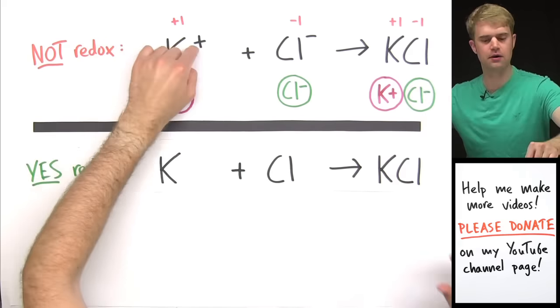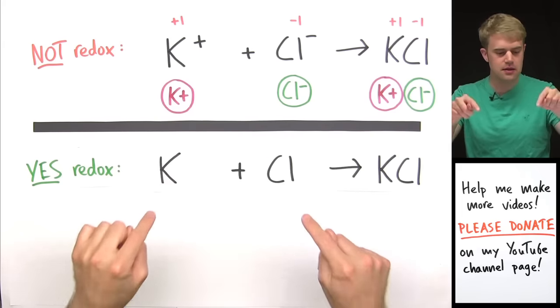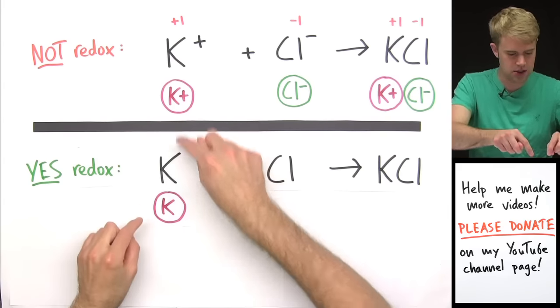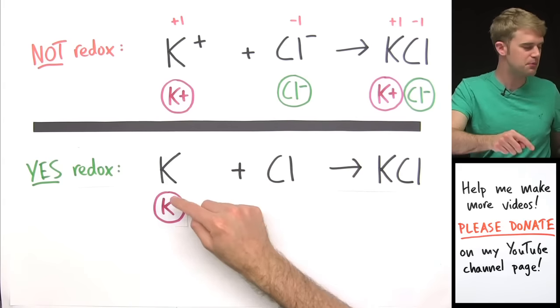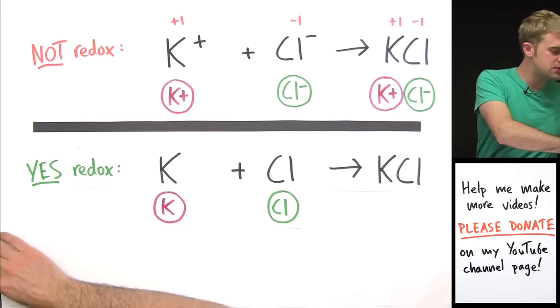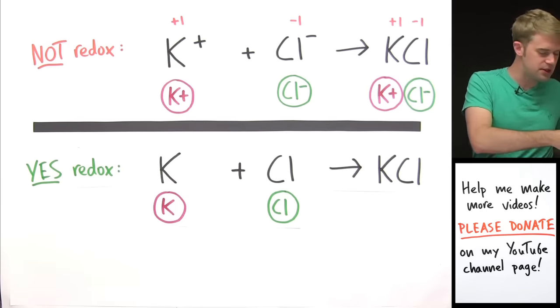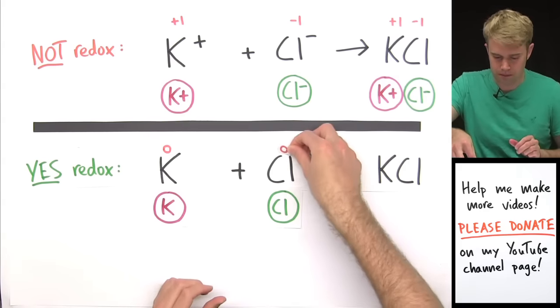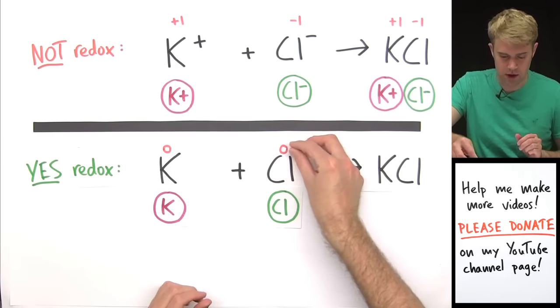In this equation up here, they had charges. In this equation down here, they don't have charges. They start out not as K+ and Cl- but as neutral atoms as K and Cl. To emphasize that they're neutral, we can put these oxidation numbers, these zeros above them. The zeros tell us that they're neutral.